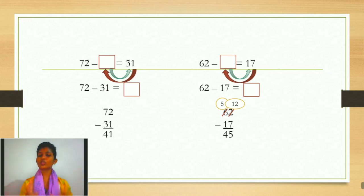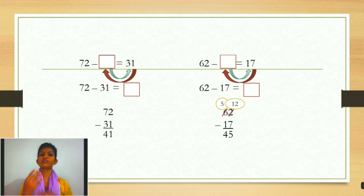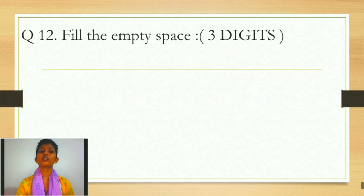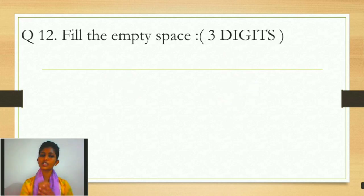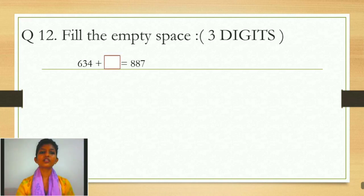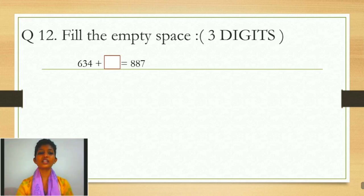This was two-digit numbers in addition and subtraction. Now we are moving to a new topic — three-digit numbers. In your practice book, question number 12: Fill in the empty space. Humne abhi two-digit kiya; ab humare paas aayega three-digit sum. The question is: 634 plus box is equals to 887.